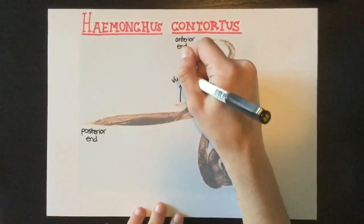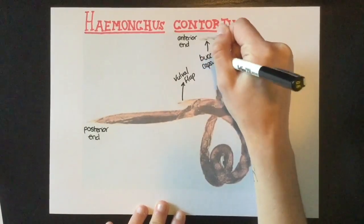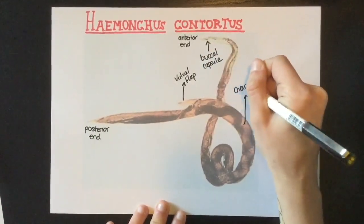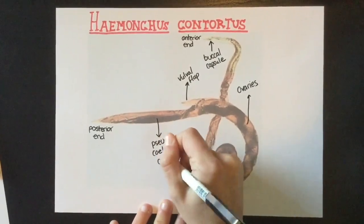Hi, my name is Haemonchus contortus and I'm a nematode in the Trichostrongylidae family. But you can call me Barber's Pole because of my striped appearance. I get it from the spiral pattern of my white ovaries alternating with the blood I've eaten that you can see through my transparent body cavity.